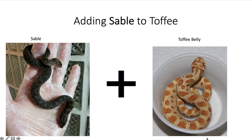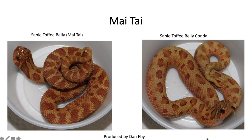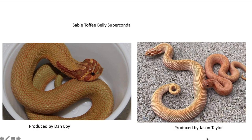The last recessive gene we're going to talk about is sable mixed with toffee — if you watched my sable video you've already seen this. It's called the muay thai, and it's one of the prettiest snakes out there. On the right is the regular muay thai, and on the left is the muay thai conda with a reduced pattern. When you have two copies of the conda gene you get the muay thai super conda. Shout out to Jason Taylor for a great comparison photo between the toffee super conda and the muay thai super conda.